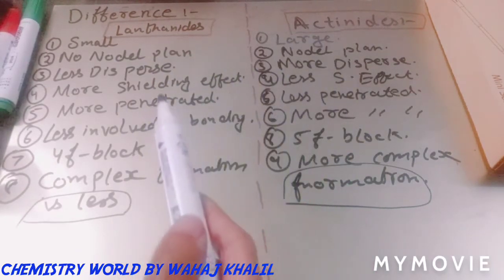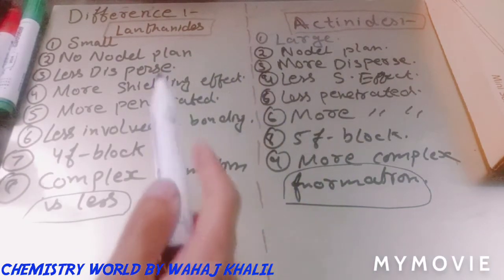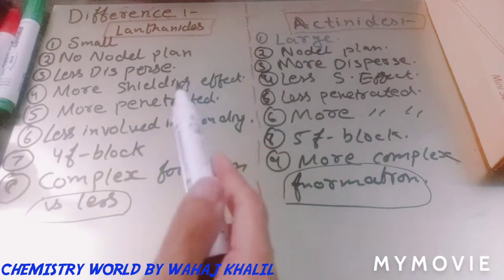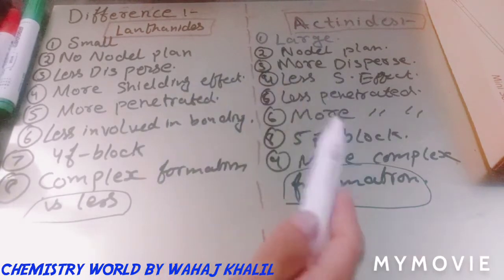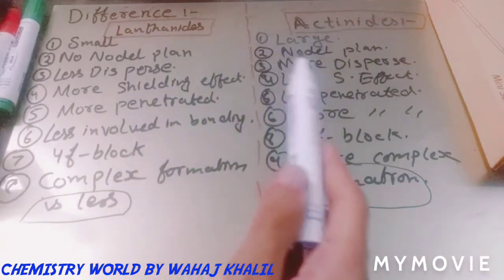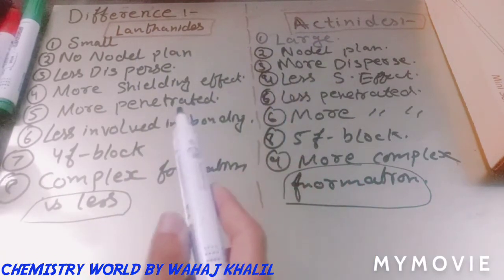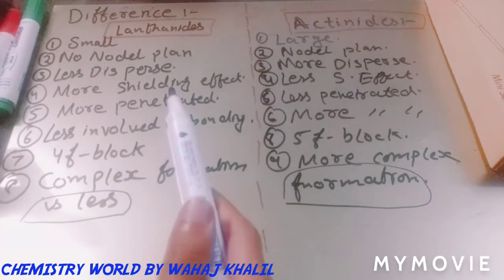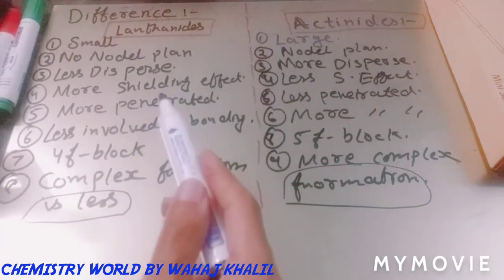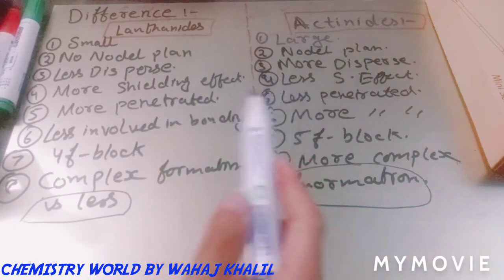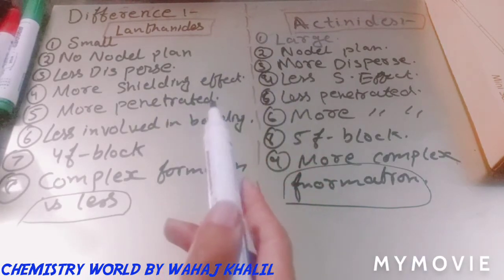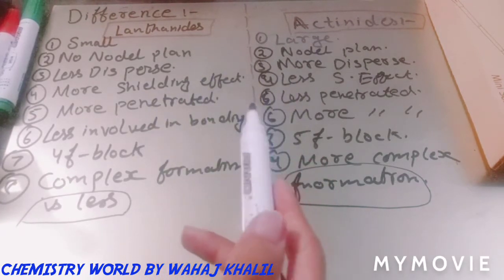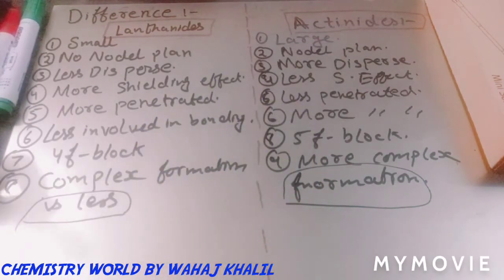This was our last topic on F block elements — lanthanides and actinides. If you liked this series, please share, subscribe, and don't forget to press the bell icon. Thanks.